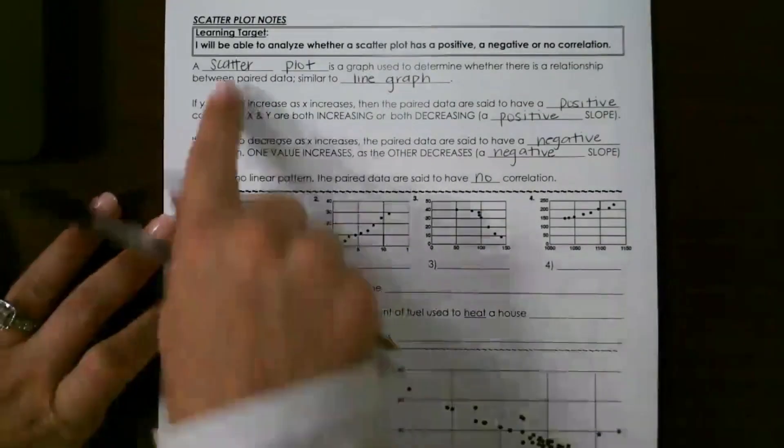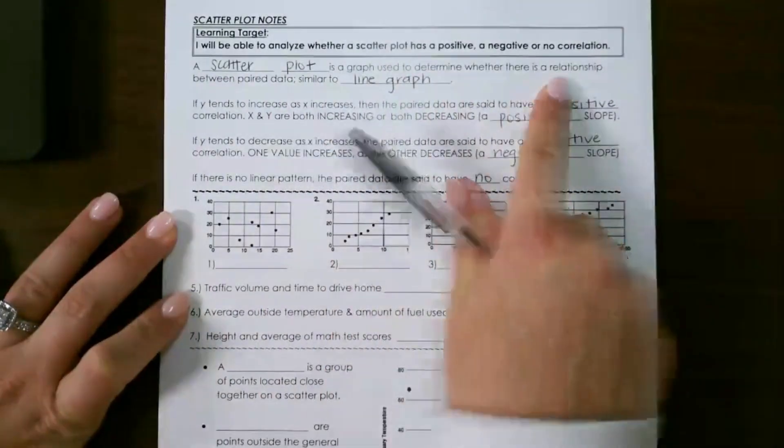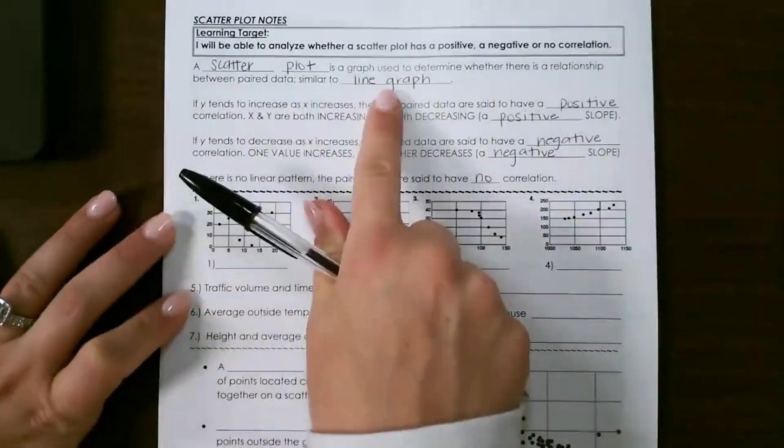Let's look at reading a scatter plot. A scatter plot is a graph that's used to determine whether there is a relationship between paired data. It's similar to a line graph.